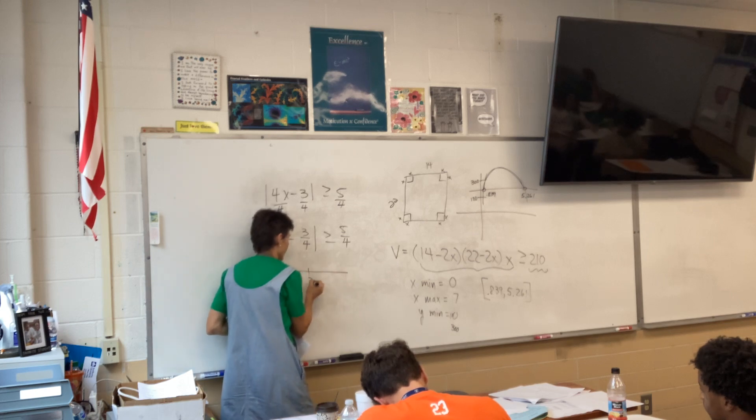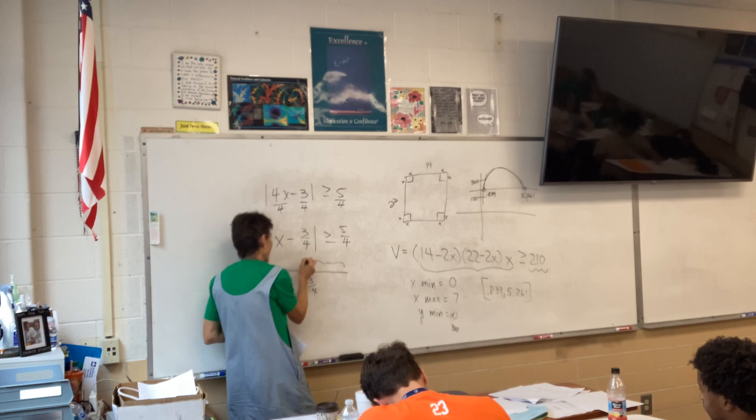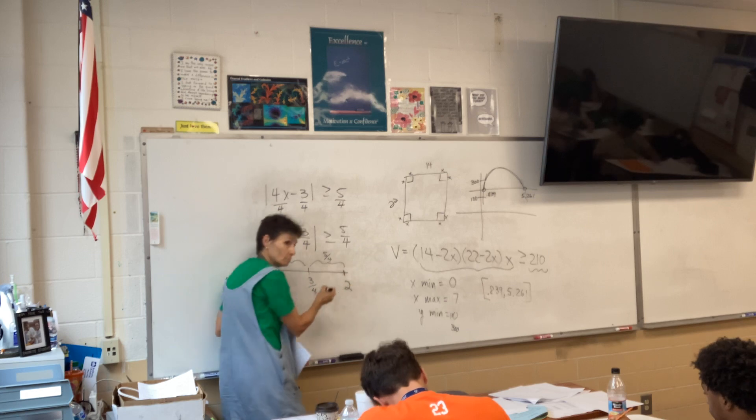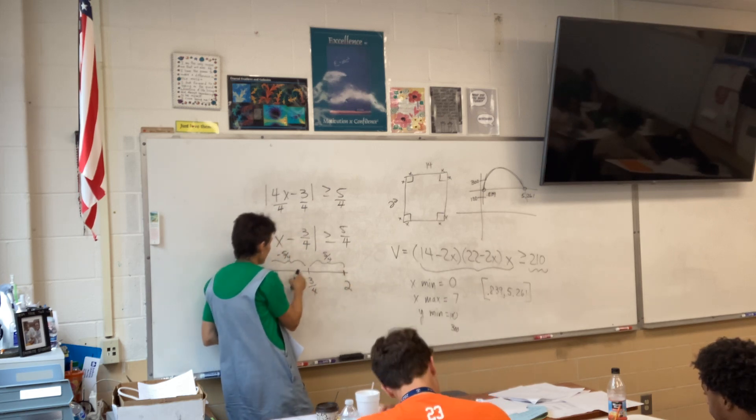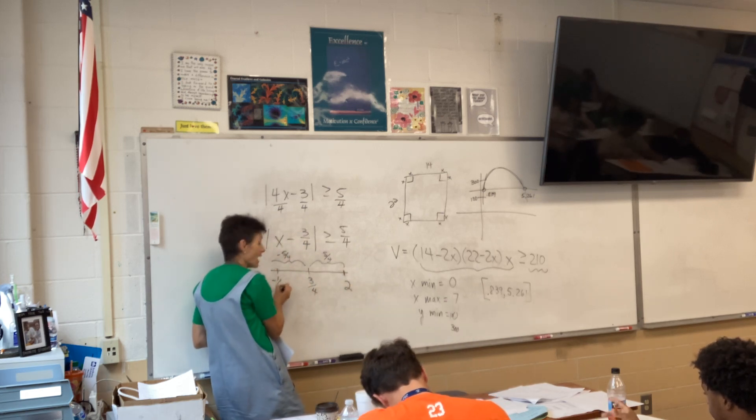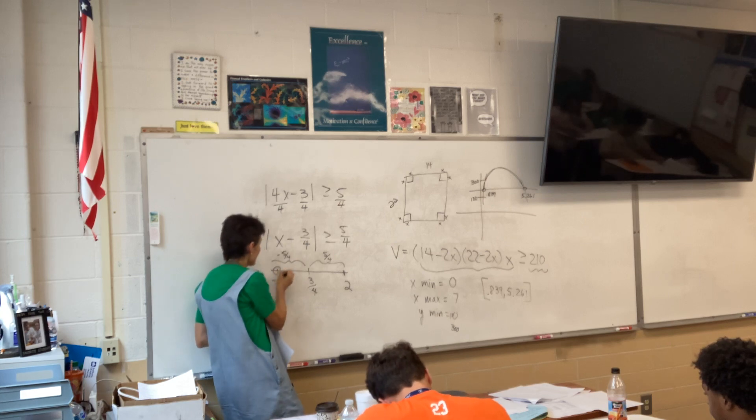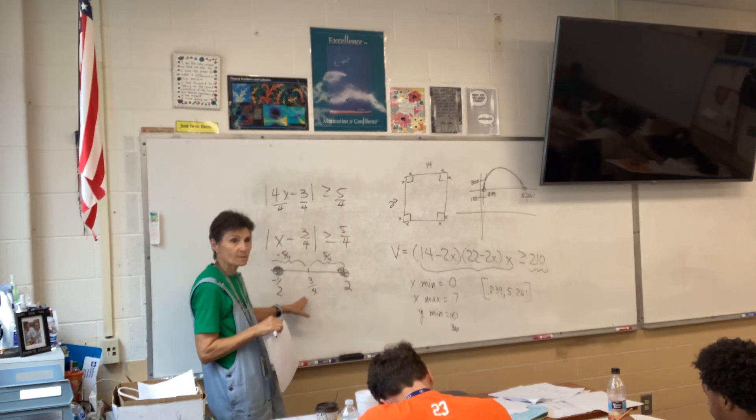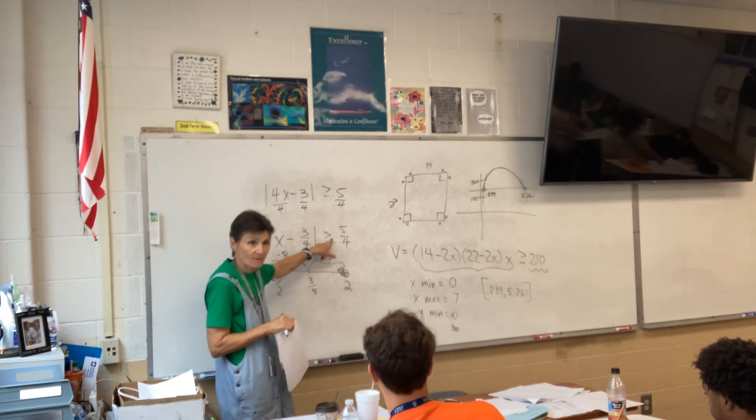So, here's 3 fourths on the number line. If I count 5 fourths both ways, so add 5 fourths and subtract 5 fourths, let's see. This would be 3 plus 5, that's 2. 3 minus 5, this is negative 1 half. These two points are exactly 5 fourths away from 3 fourths.